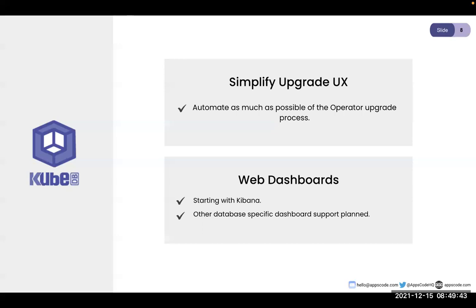We're starting with Elasticsearch and Kibana since that's the most frequently requested, but we'll do it for other databases too. Postgres is an important one, and there are some generic tools that can work with multiple databases. There are interesting questions around how authentication for those systems will work, but at minimum, if you have root access to the secret you should be able to use it in a web-based UI.